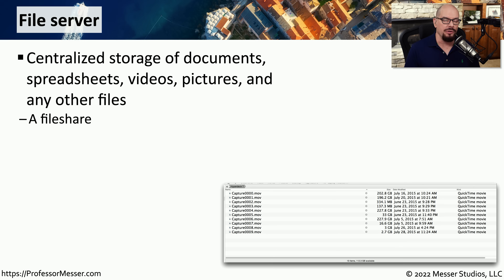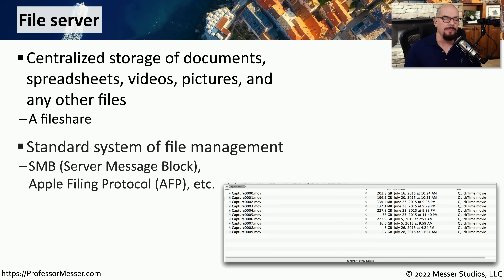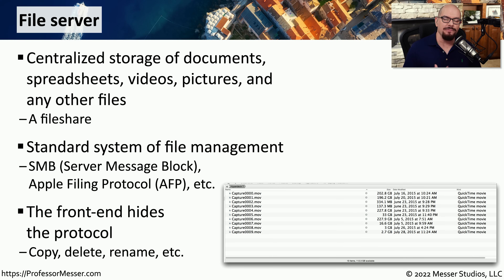Now that you can connect to the network, you can also store files on the network using a file server. This is a centralized storage device, usually with a set of folders you can use to store all of your information. Because these are stored on the network, you can log in from any device and have access to your personal files. The operating system you're using has a common way to communicate to this file server — in Windows you're probably using SMB or Server Message Block; on macOS you're probably using AFP or the Apple Filing Protocol. From a user's perspective, they just see a file management front end where they can copy, delete, rename files, or do anything else on this centralized file server.